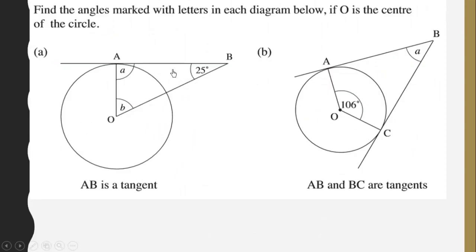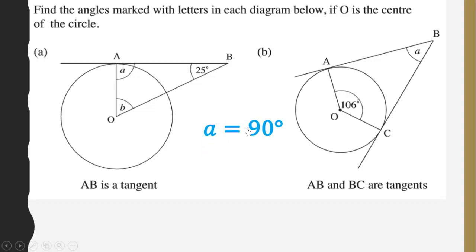We have the first one: find the angles marked with letters in each diagram below, if O is the center of the circle. We can see that AB is a tangent, and O is the center. You know that a tangent and a radius will always make an angle of 90 degrees. So angle A will be equal to 90 degrees.